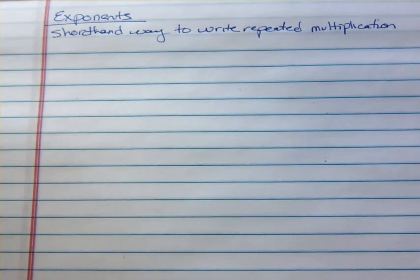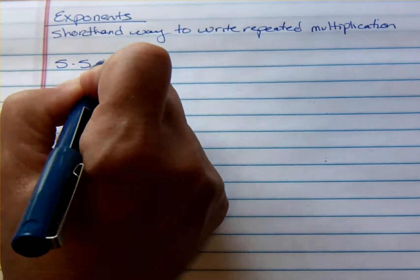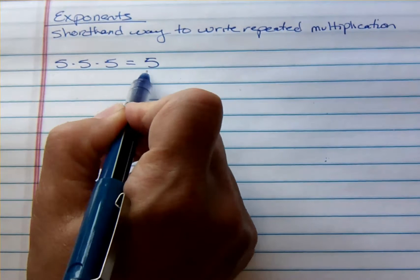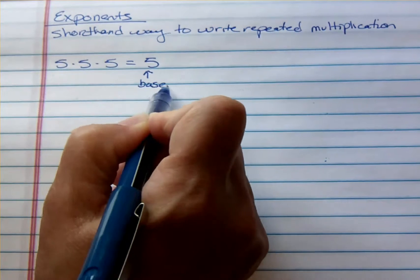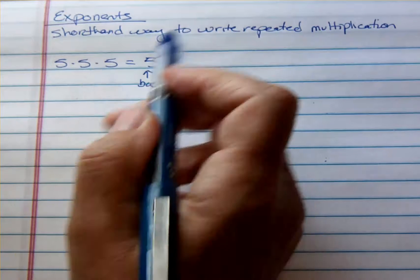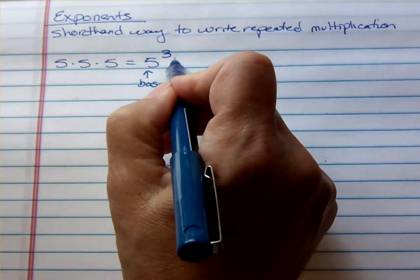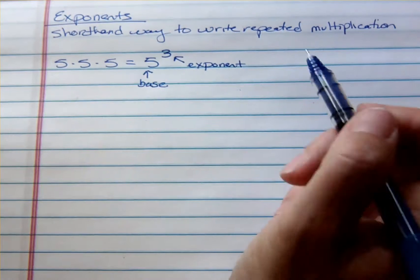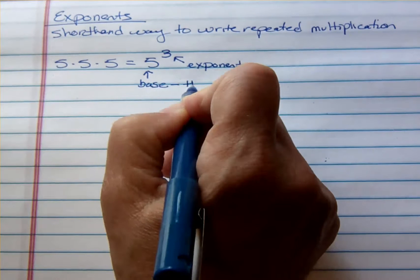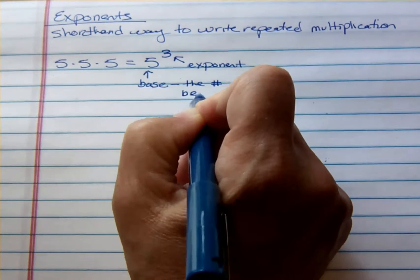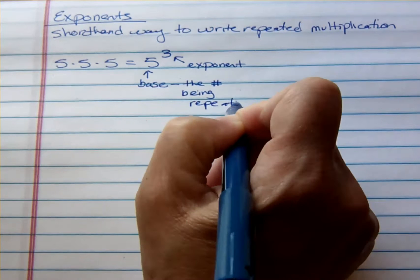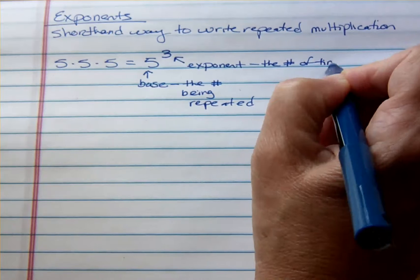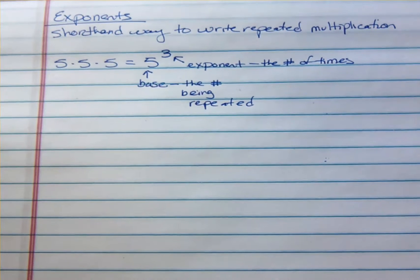So if I have 5 times 5 times 5, the 5 is what I would call the base — that's the number that's being repeated. And then I have three 5s, so I would say 5 to the third power. That's the exponent. The base is the number being repeated, and the exponent is the number of times that something's being repeated. So we have a base and an exponent.